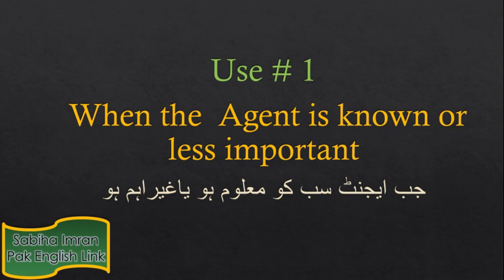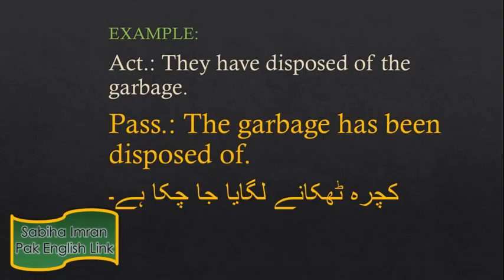Passive voice का पहला इस्तेमाल है उस वक्त जब agent known हो यानि सबको पता हो कि यह काम कौन कर सकता है, या फिर आप agent को एहम नहीं समझते बल्के काम को एहम समझते हैं। मिसाल के तौर पर — 'They have disposed of the garbage' — इसकी passive voice होगी 'The garbage has been disposed of' — यानि कचरा ठिकाने लगाया जा चुका है। एहमियत इस बात की है कि सड़क साफ हो गई, किसने किया यह एहम नहीं।